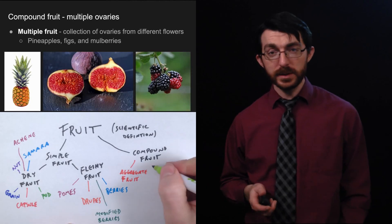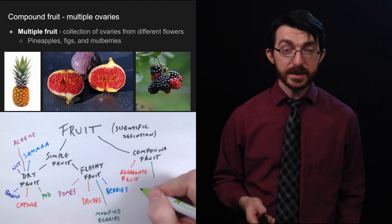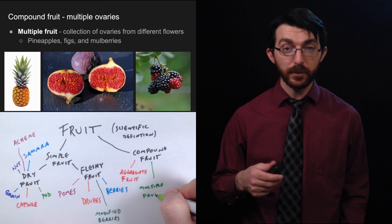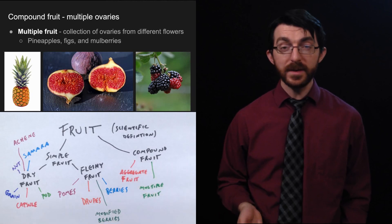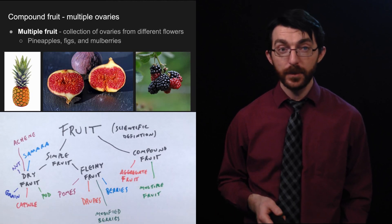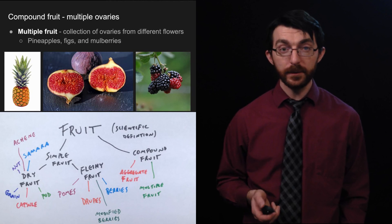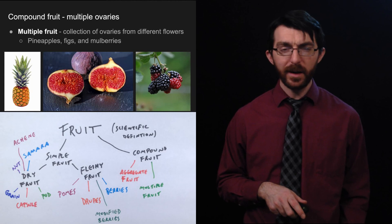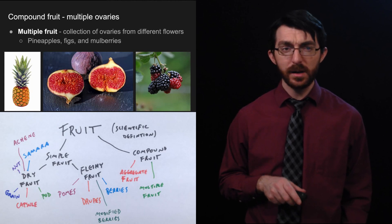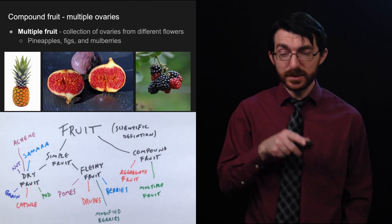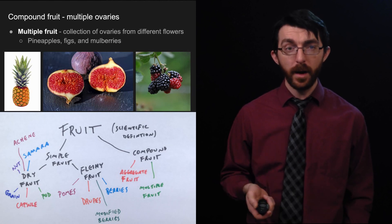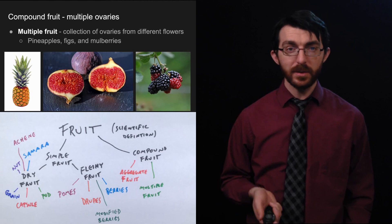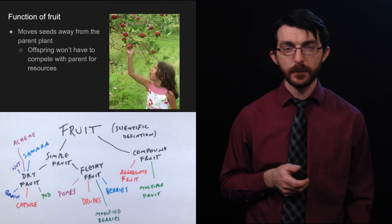Besides aggregate fruit, we also have multiple fruit instead of multiple ovaries from a single flower. This is a collection of ovaries from several different flowers and good examples of these would be pineapples, figs, and mulberries. Now we're very familiar with pineapples and, you know, they have that pattern on them, kind of almost looks like a turtle shell. Each one of those little cells in that pattern comes from another flower. So when it all fuses together into one fruit, that is called a multiple fruit.